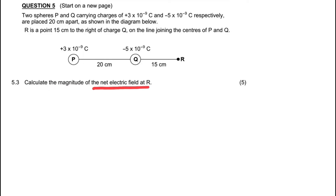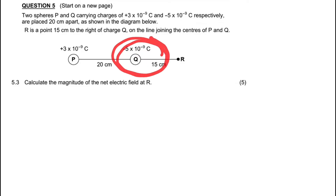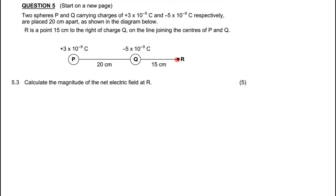The question asks us to calculate the magnitude of the net electric field at R. I skipped the earlier questions about the definition and forces between the two charges. Now, what you need to note is that point R is in the electric field of both charges — it's experiencing an electric field strength due to Q as well as due to P.